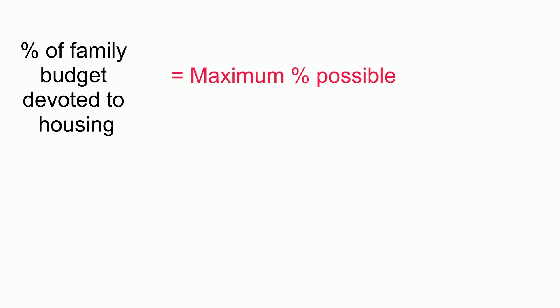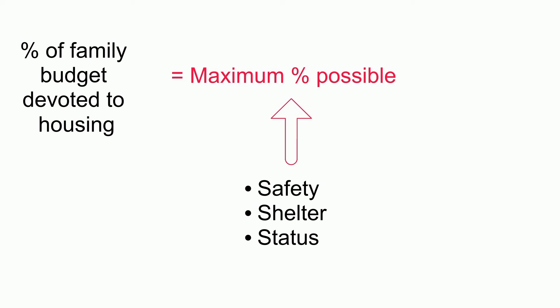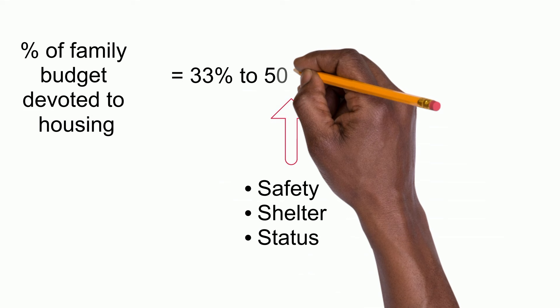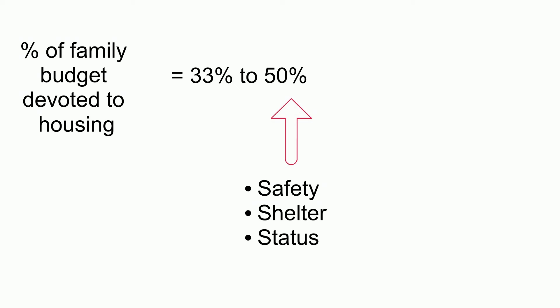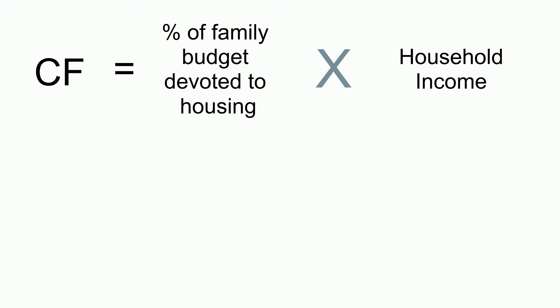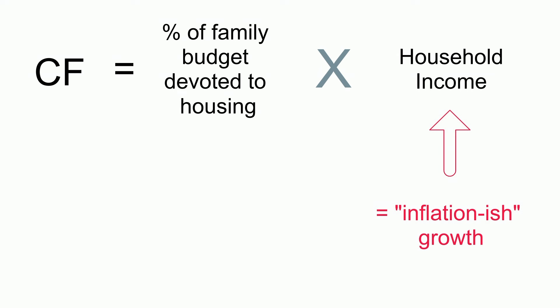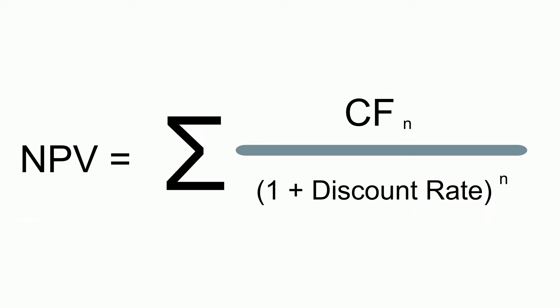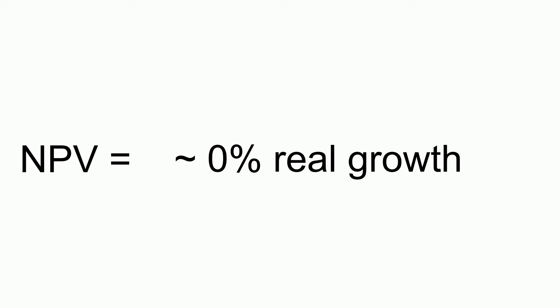Housing represents a combination of various intractable life necessities such as safety from crime, basic shelter, and social status. Households typically spend between 33% to 50% of their incomes on housing, with lower-income households paying a higher percent of income. Household income itself tends not to change very dramatically over time. Since household income growth tends to be anemic, the growth of 33% of household income also tends to be anemic. Hence, the NPV of 33% of household income cannot be expected to produce dramatic increases in value over time, akin to speculative assets like gold or fine art. This may explain why houses don't appreciate much in real terms throughout the centuries.